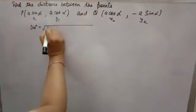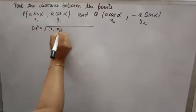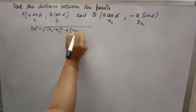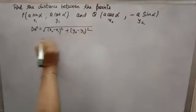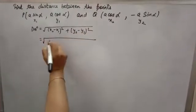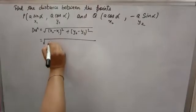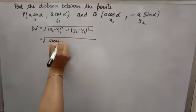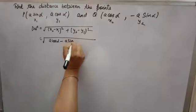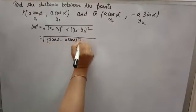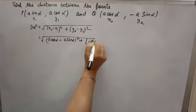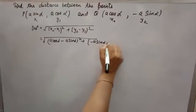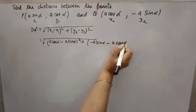Under root of x2 minus x1 whole square plus y2 minus y1 whole square. Put the value of x2, x1, y2, y1. x2 is a cos alpha minus x1 is a sin alpha whole square. Plus y2 is minus a sin alpha, y1 is minus a cos alpha.